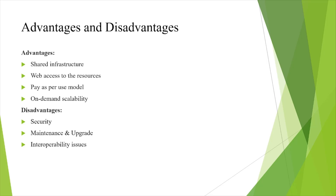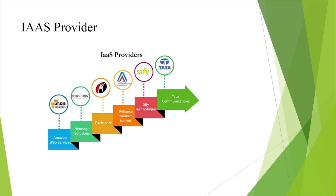IaaS providers include Amazon Web Services, Netmagic Solutions, Rackspace, Tata Communications, C3 Technology, and others. If we talk about AWS, you can hear about EC2, actual private cloud, etc. Netmagic Solutions provides Netmagic Infrastructure as a Cloud Solution. These are the applications of particular IaaS service providers.